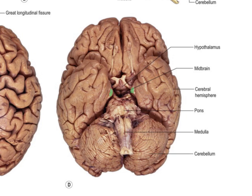This part of the temporal lobe is known as the uncus of the temporal lobe, and it has a really important clinical significance. The uncus of the temporal lobe sits right next to the midbrain, and very close to where the third nerves come out of the midbrain. If intracranial pressure increases and pushes the uncus down through the tentorial notch into the posterior fossa, the uncus can compress the midbrain and lead to a very typical set of signs, which includes a third nerve palsy. So this so-called uncal herniation is really important.